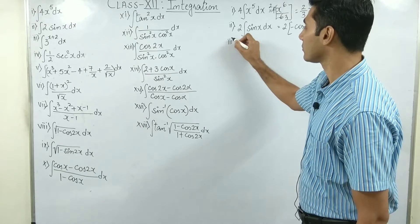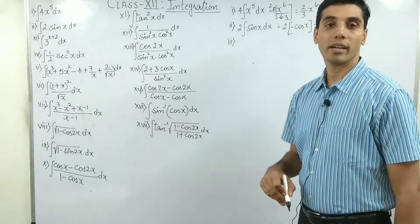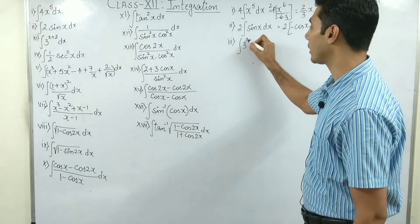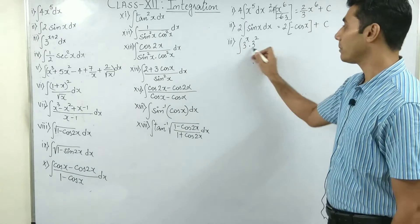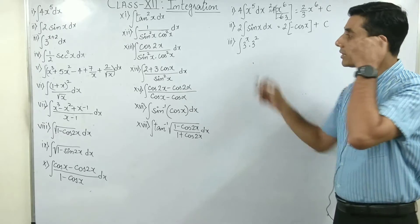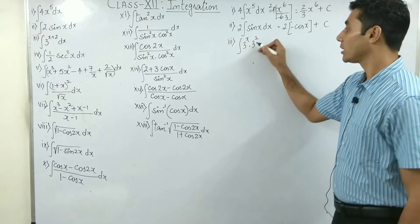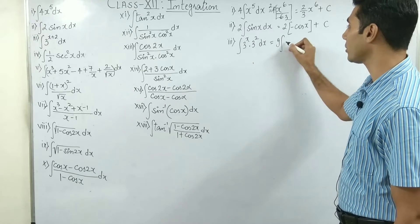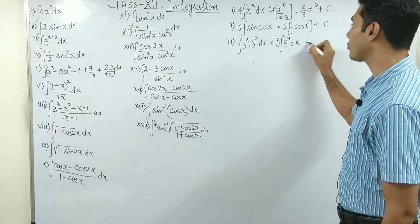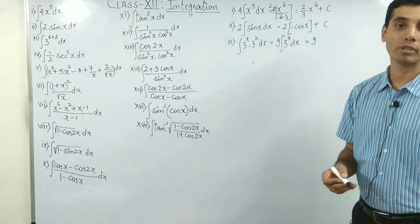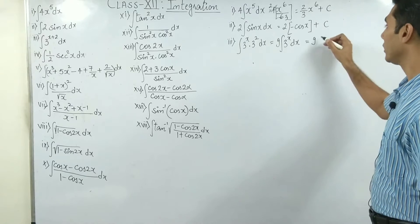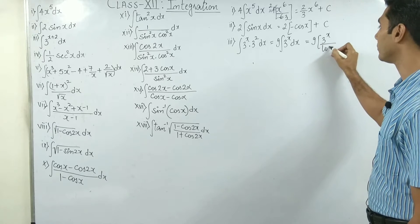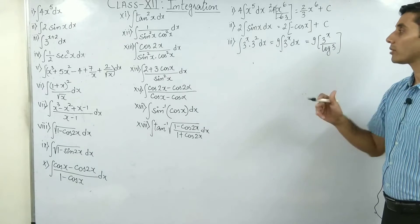Question number 3: integrate 3 to the power x plus 2. We can write this as 3 to the power x times 3 to the power 2, because when the base is the same, powers add up. Since 3 squared is 9, take out 9 outside. Now apply the formula: integration of a to the power x is a to the power x upon log a. So the answer is 9 times 3 to the power x upon log 3, plus c.